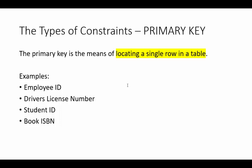Now we go to the primary key constraint. This is used to locate a single row in a table — that's usually the first column, and that column uniquely identifies each row. Examples include employee ID — no two employees have the same employee ID. We also have driver's license number, student ID, and book ISBN.